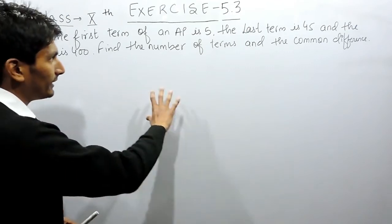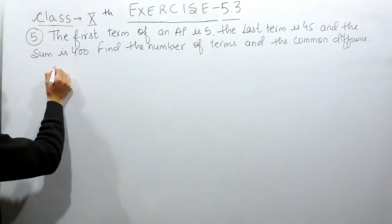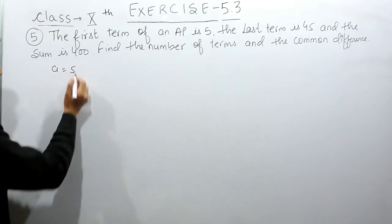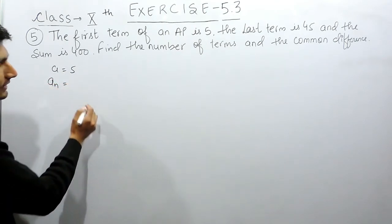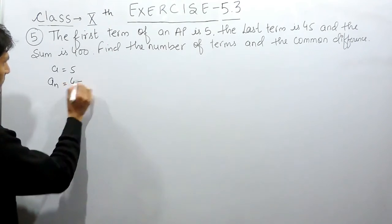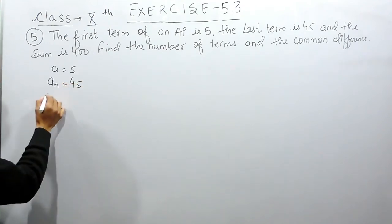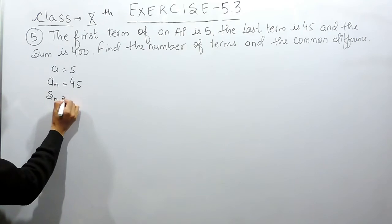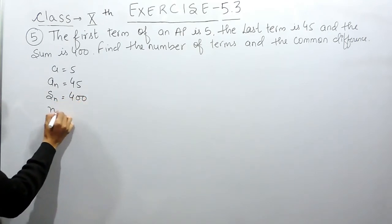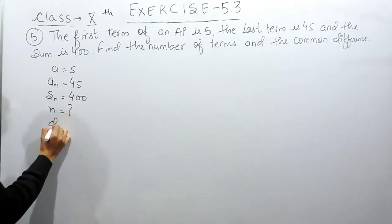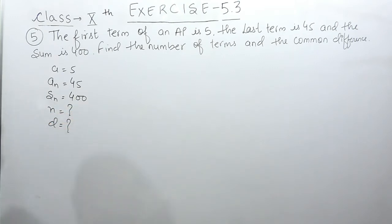You are given an AP in which the first term is 5 and the last term is 45, and the sum of this AP is equal to 400. You have to find the number of terms and the common difference in this case.